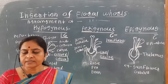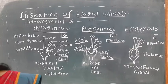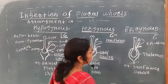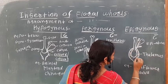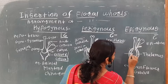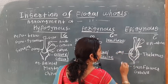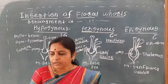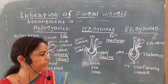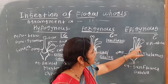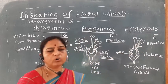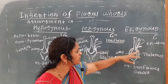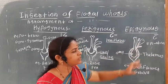In the epigynous flower, the thalamus completely encloses the ovary. The remaining three floral whorls — calyx, corolla, and androecium — are above or at the top of the ovary. That is, 'epi' means above, so the floral whorls are above the gynoecium.